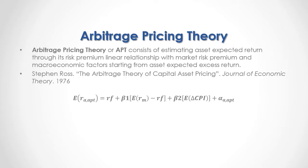The macroeconomic factor corresponds to the expected change in CPI — the consumer price index. When the change is positive, it's considered as inflation; when negative, deflation. Plus alpha, which is the asset expected excess return through the arbitrage pricing theory.